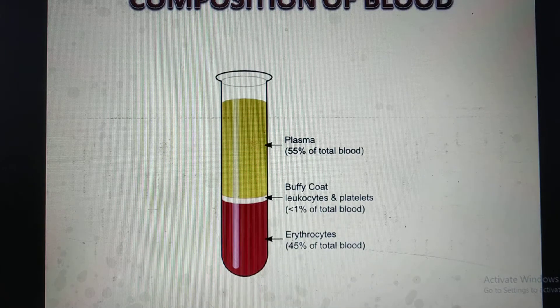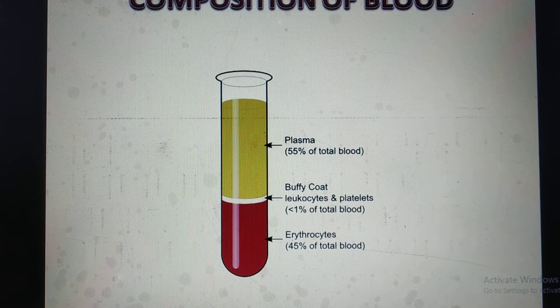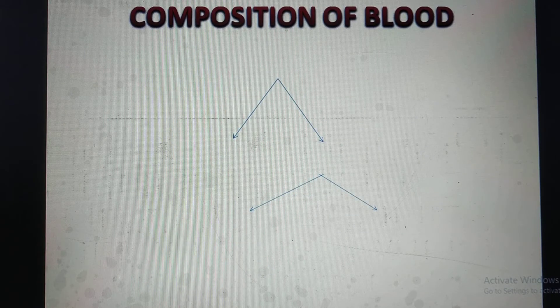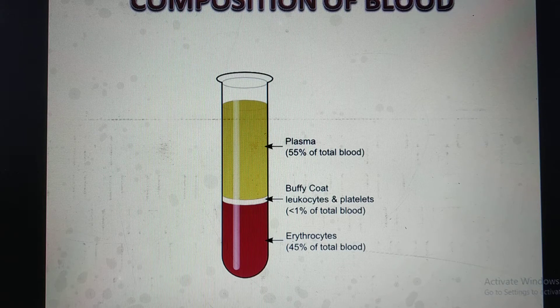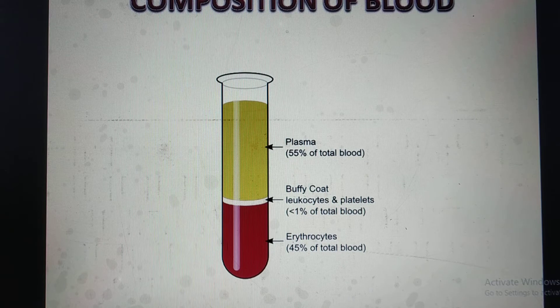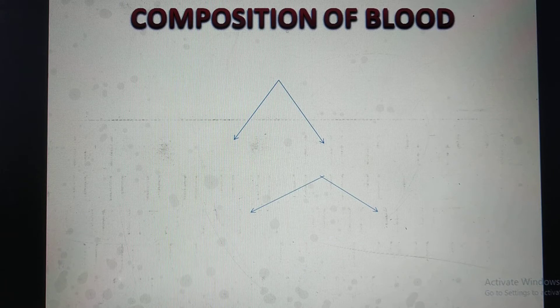Composition of blood. After centrifugation of a blood sample, these compositions are shown in a blood vial. The bottom of the vial contains blood cells at 45%, including RBC and WBC. The middle contains 1% buffy coat, which presents as pellets. The upper separated part is serum or plasma at 55%.